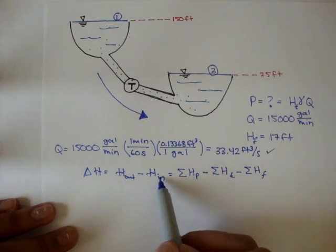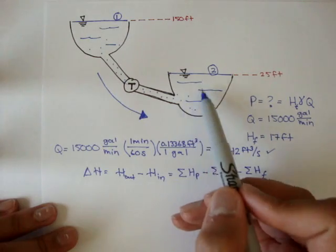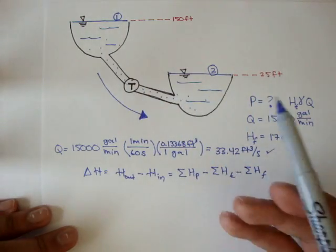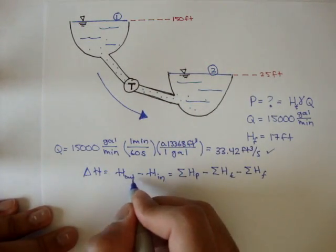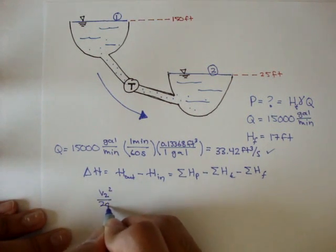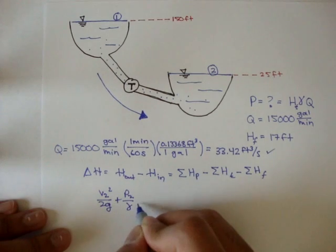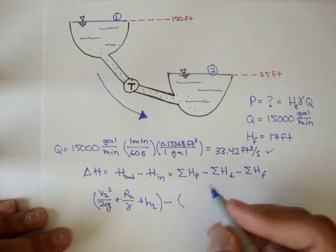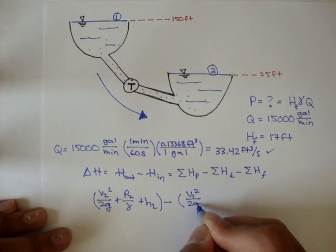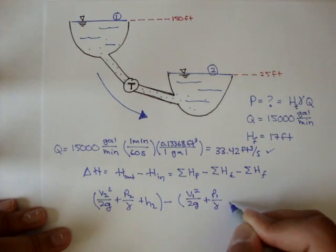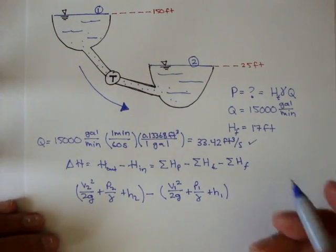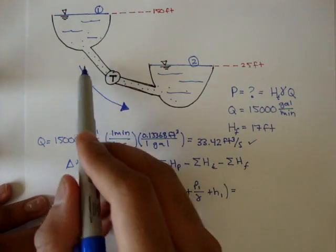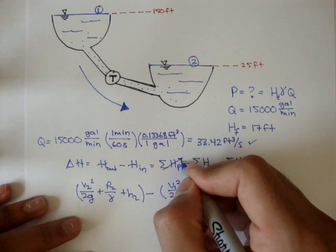And remember, our out minus in, water is coming in this way. So it's going to come out here into this reservoir, and the entrance is up here, so it's going from here to there. So we can say the out is the V2 squared over 2G plus the pressure at 2 over gamma plus the height at 2, minus in, which is up here, velocity 1 squared over 2G plus pressure at 1 over gamma plus height of 1. And that's equal to all of this. Now, if we look back at the system, are there any pumps? No, there's no pump, so there's no pump head. This is 0.